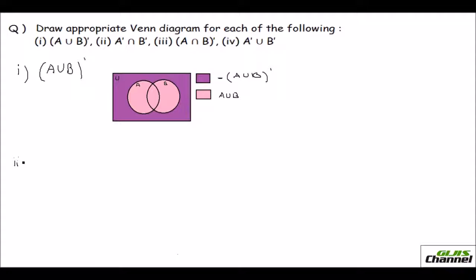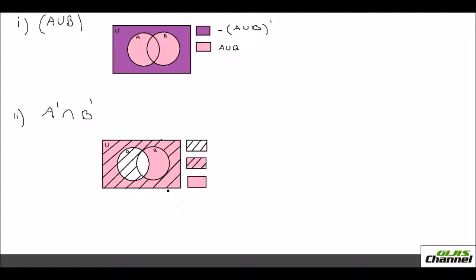Now the second one: A complement intersection B complement. First I shade A complement — leaving A and shading all the rest. Then I do B complement, drawing strip lines leaving the B circle. Since it is intersection, I take the area where both shadings appear. That area is your A complement intersection B complement.